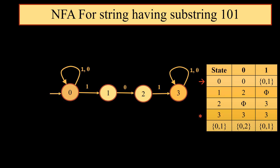Now corresponding to this new state {0, 1}, if we consider input 0 we get the output {0, 2}, and corresponding to input 1 we get the output {0, 1}. {0, 1} is already considered as a state in the table.